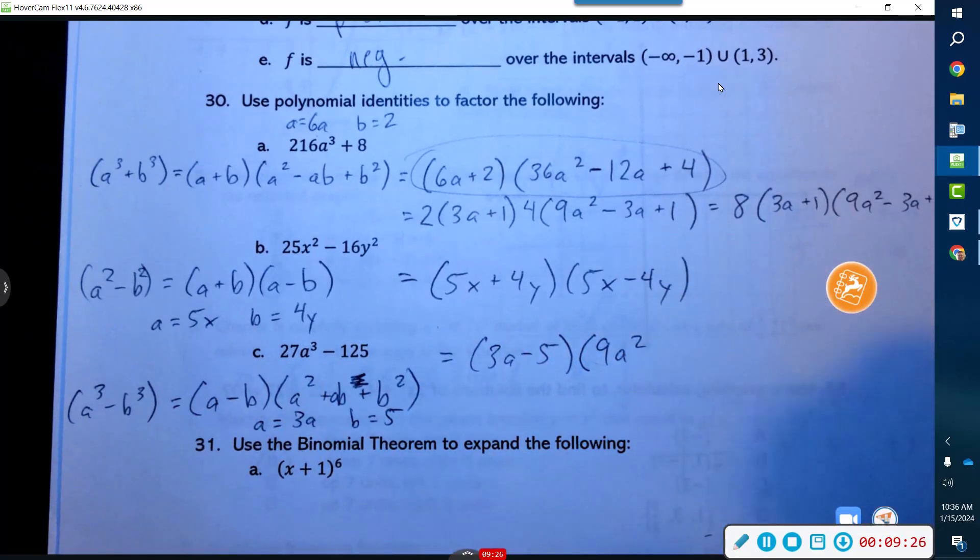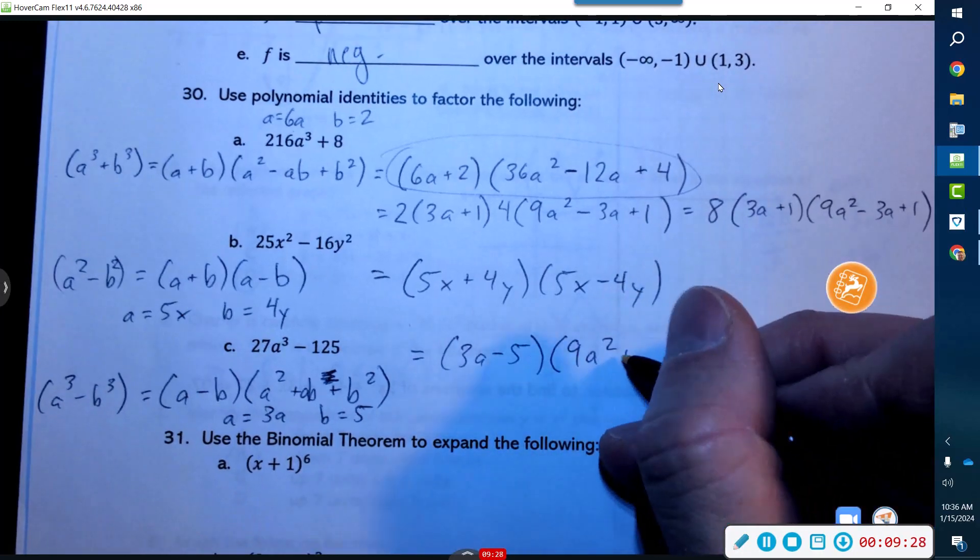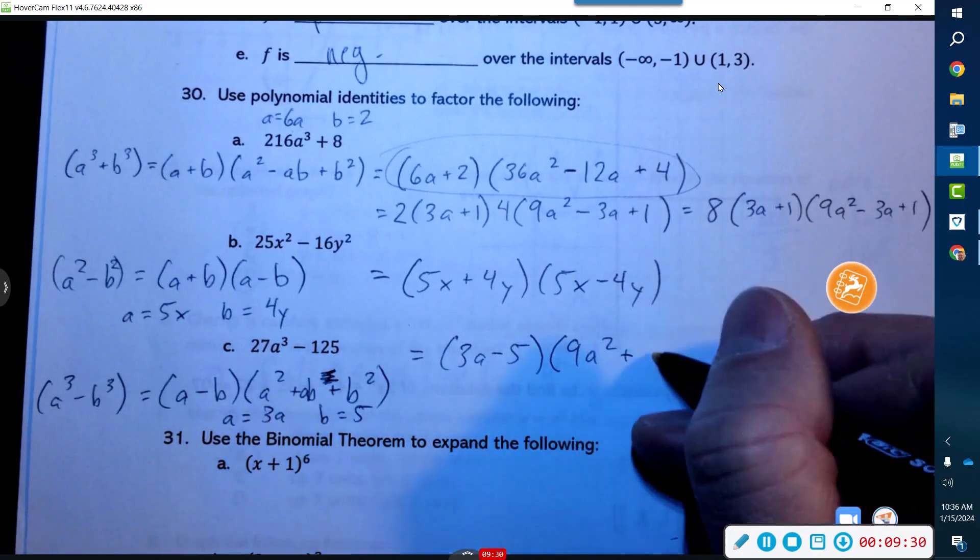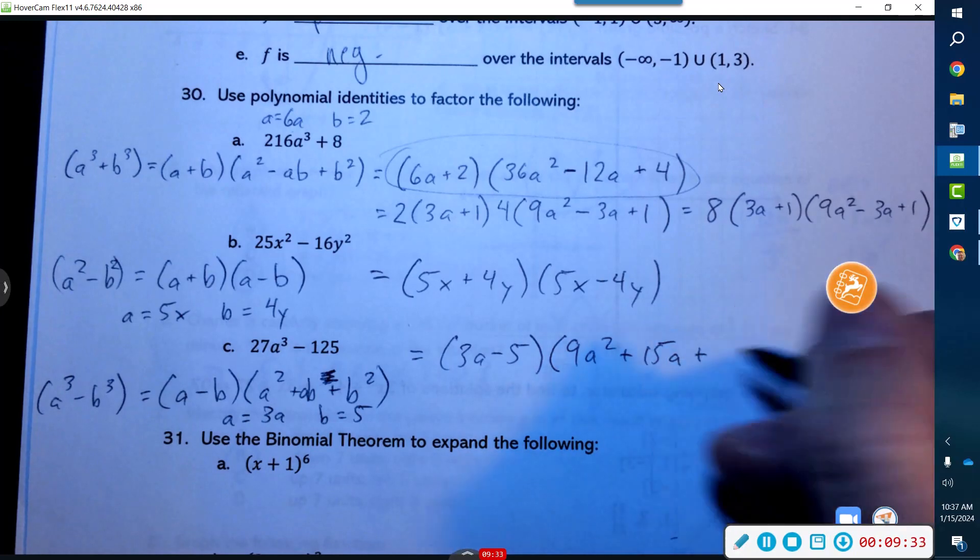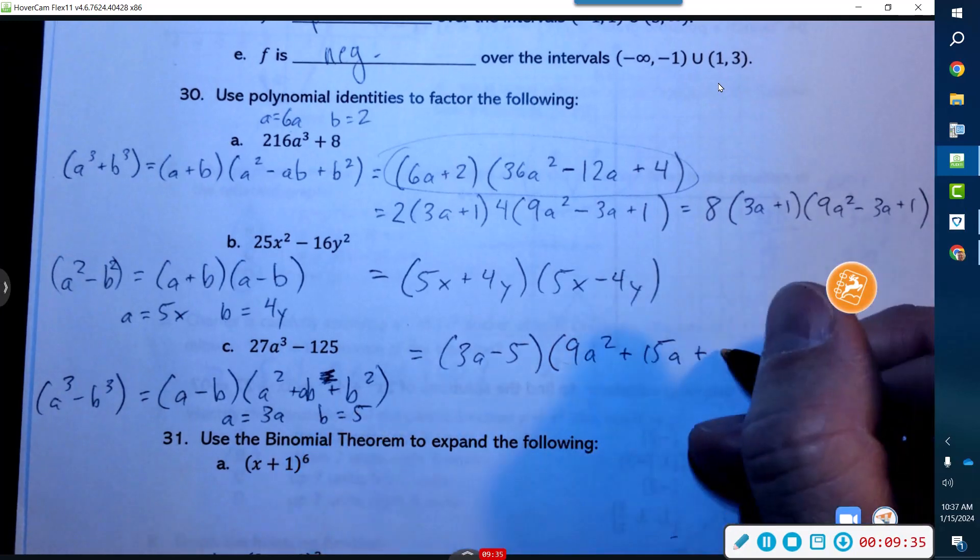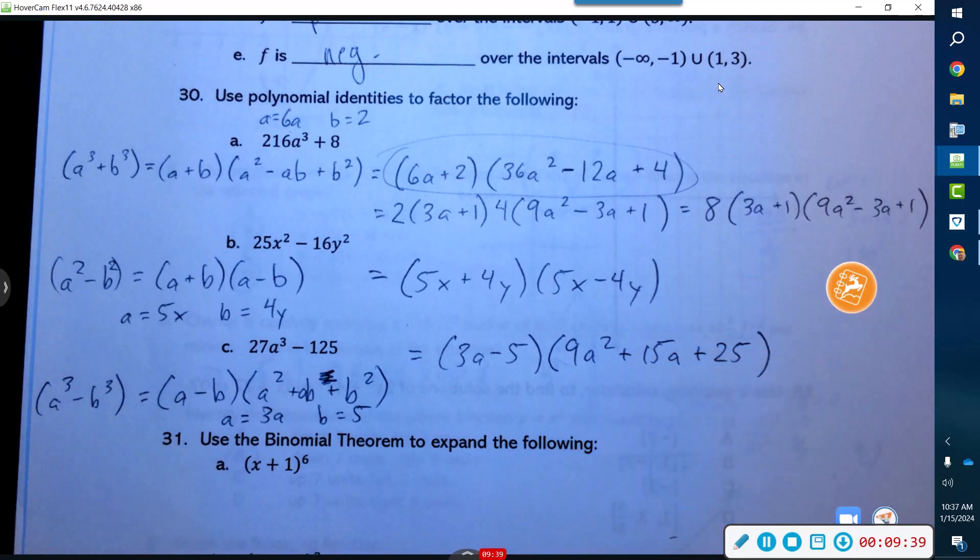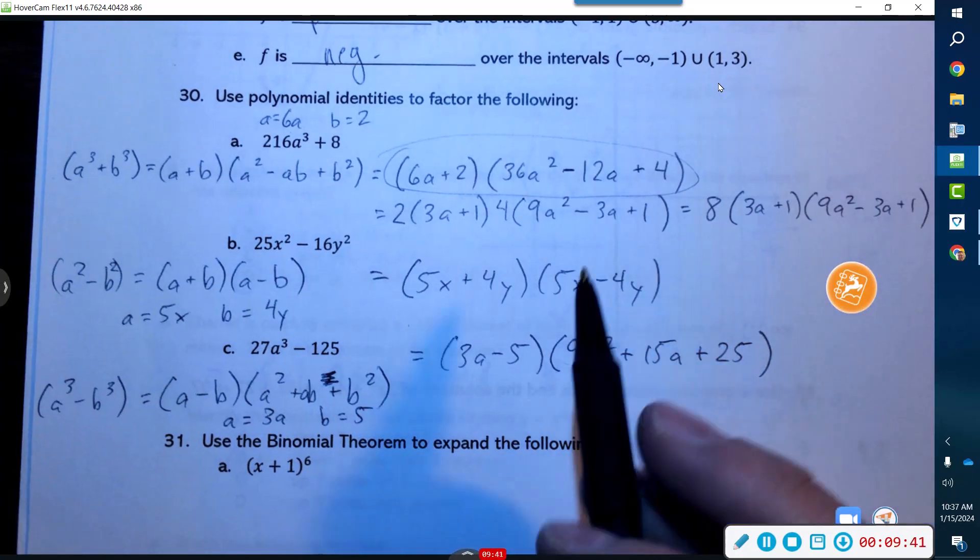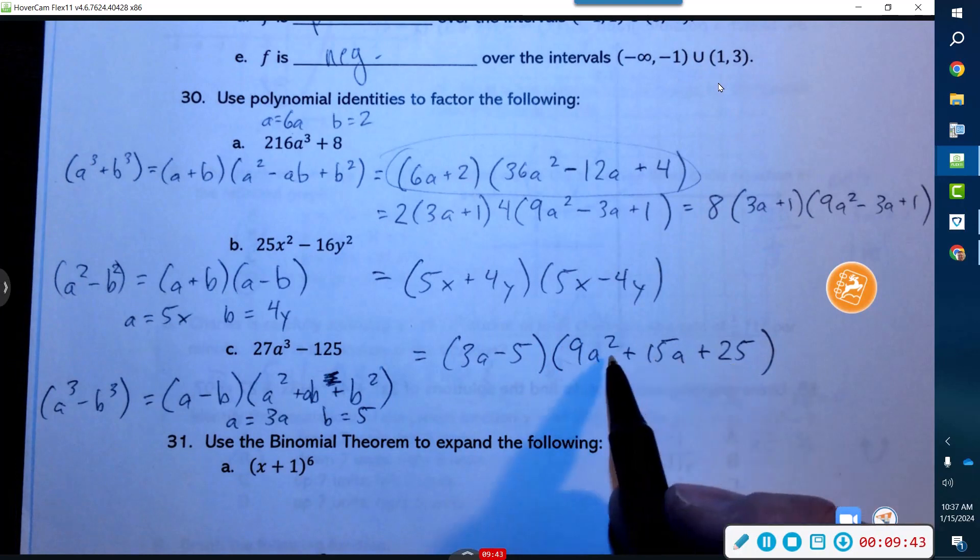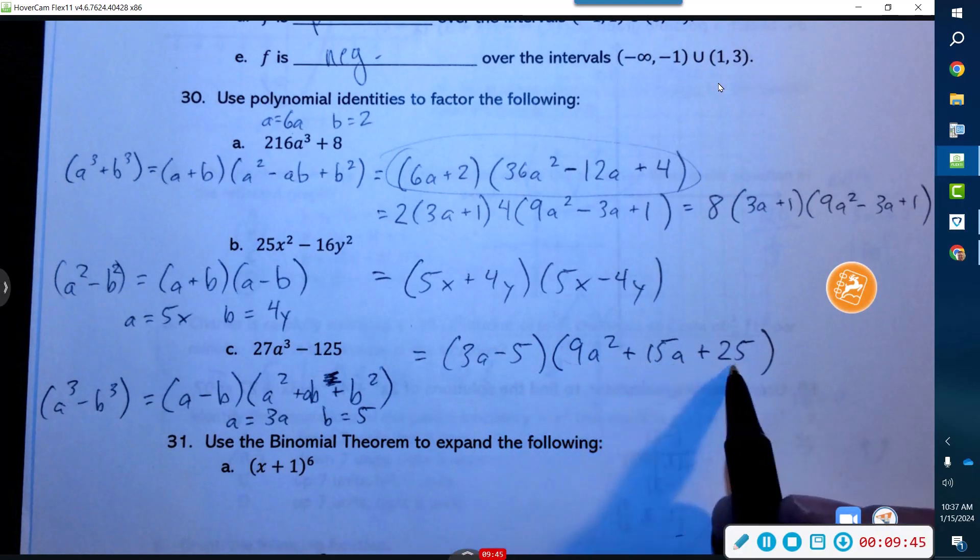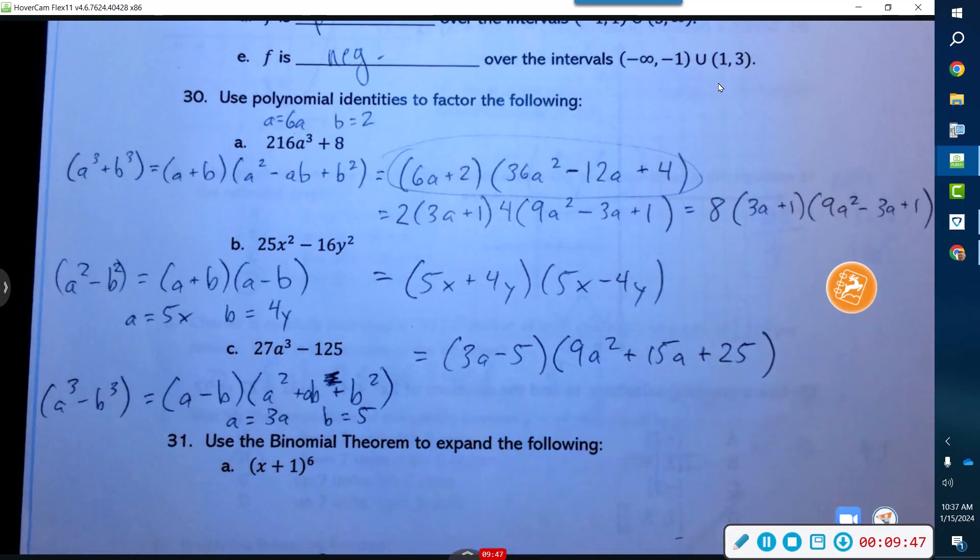Then I have to add a times b, which is just 15a, plus, and then b² is just 25. So those guys are good. There was no GCF in the beginning, so there is no common factor here. I do see a 3 divisible here, but not here. And yep, so this guy's done, it's absolutely finished.